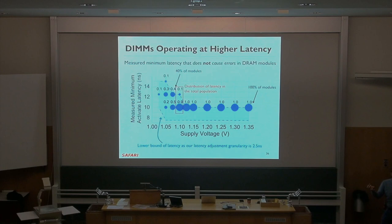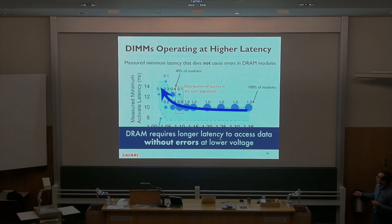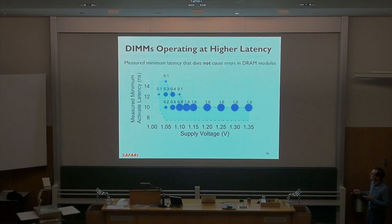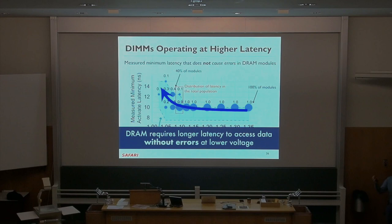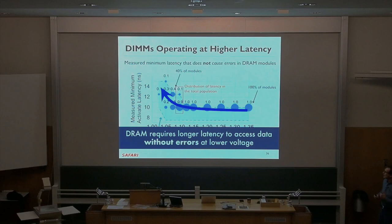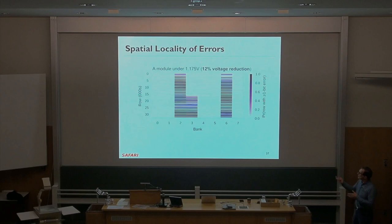DRAM requires longer latency to access data without errors at lower voltage. This matches what's predicted via SPICE simulations — real-life results are very similar to the circuit model, validating those models. This is no different from architectural simulation — you always want to validate it, and our real measurements do that. So one key observation is: you need to increase latencies to access data without errors when you reduce the voltage. You could also add error correcting codes, but we'll see whether that's good.